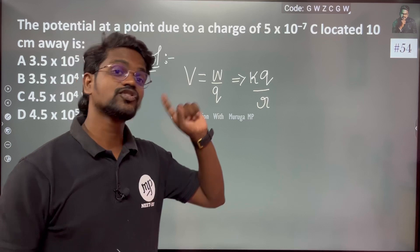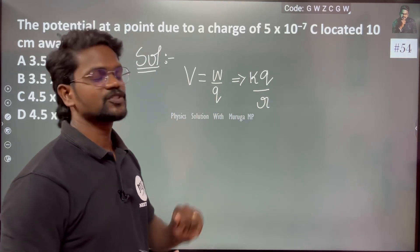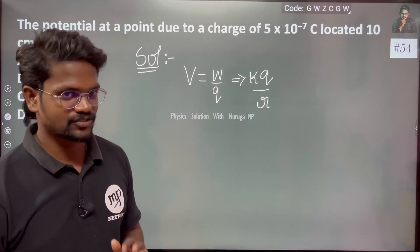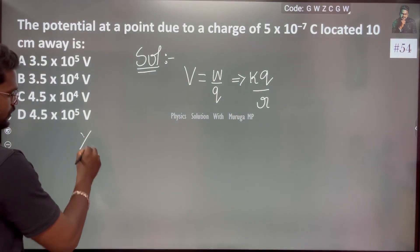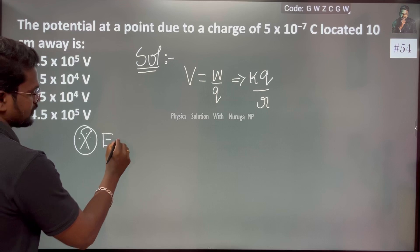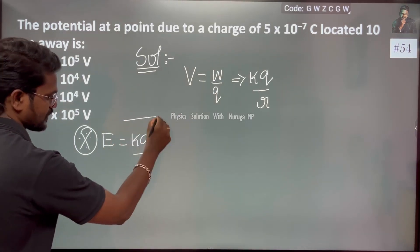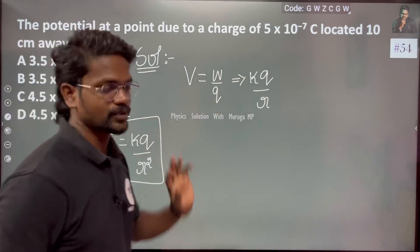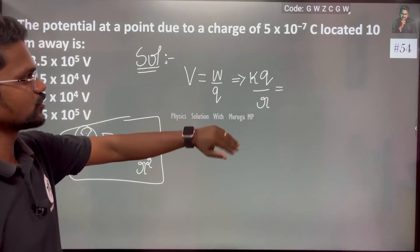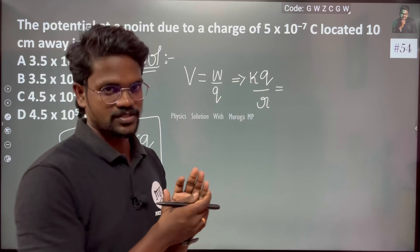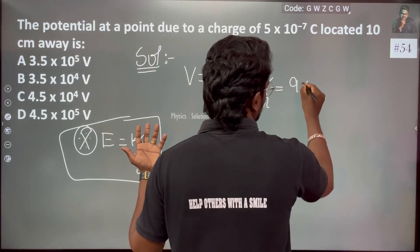The formula for potential is V = kq/r. This is important — do not confuse it with the electric field formula, which is E = kq/r². Potential is kq/r. Here k is a constant, q is charge, and r is distance.